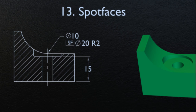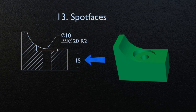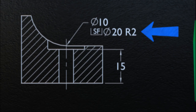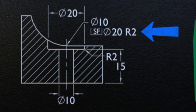Now let's take a look at spot faces. Where the diameter of the spot faced surface is specified, either the depth or the remaining thickness of the material may be specified. If no depth or remaining thickness is specified, the spot face is the minimum depth necessary to clean up the surface to the specified diameter. Where applicable, a fillet radius may be indicated for the spot face. In some cases, such as with a through hole, a notation may be necessary to indicate the surface to be spot faced. A spot face may be specified by note only and need not be shown pictorially.